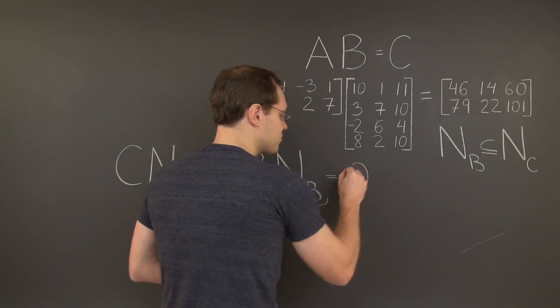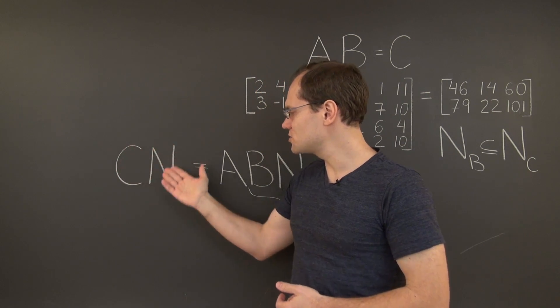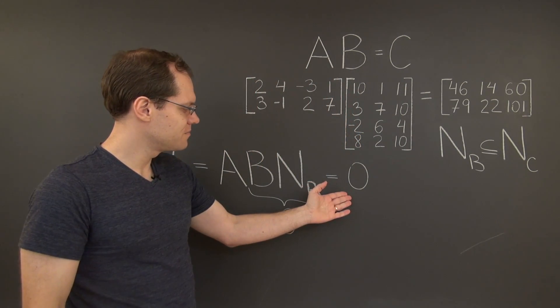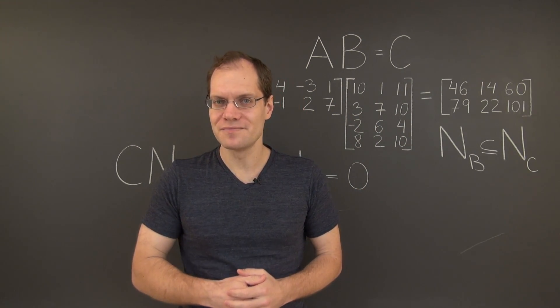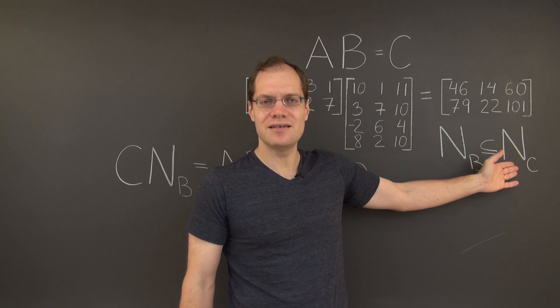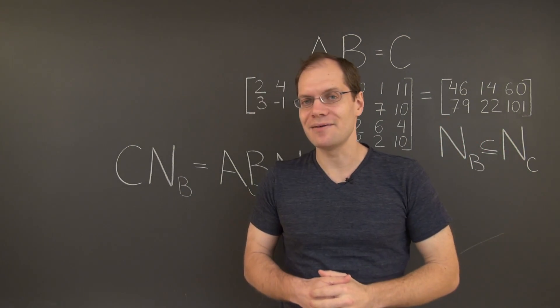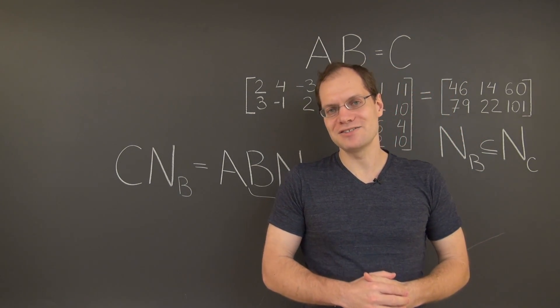And so we have arrived at the conclusion that the product of the matrix C with the matrix representing the null space of B is 0. And that brings us to the exact same conclusion as before, that the null space of C includes the null space of B. Except this time we did it with pure and perfect matrix algebra.